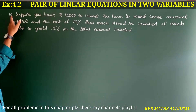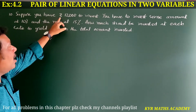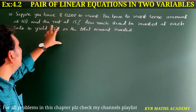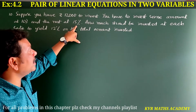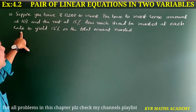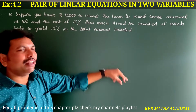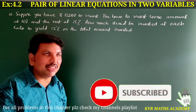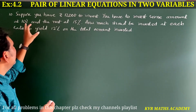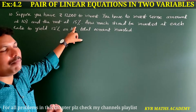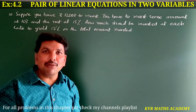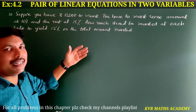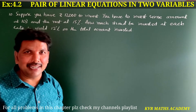Next, the 10th problem — the final problem in this exercise. Suppose you have rupees 12,000 to invest. You have to invest some amount at 10% and the remaining amount at 15%. Finally, you should get 12% interest overall. How much should be invested at each rate — at 10% and 15%?